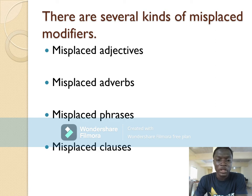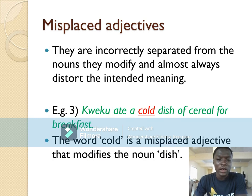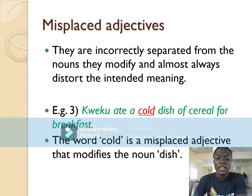With misplaced modifiers, there are four types: misplaced adjectives, misplaced adverbs, misplaced phrases, and misplaced clauses. Misplaced adjectives are incorrectly separated from the nouns they modify and almost always distort the intended meaning — when you misplace an adjective, it changes everything you are trying to communicate.